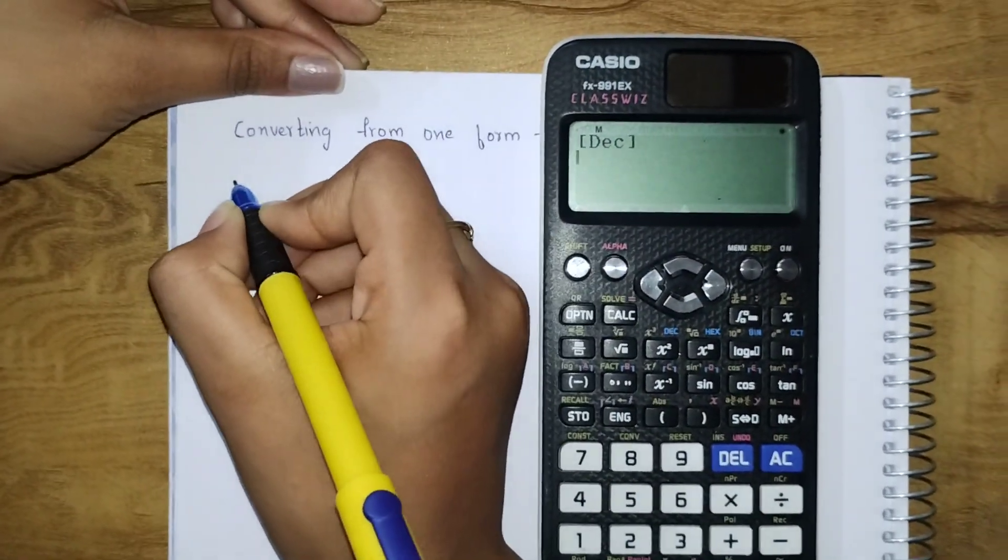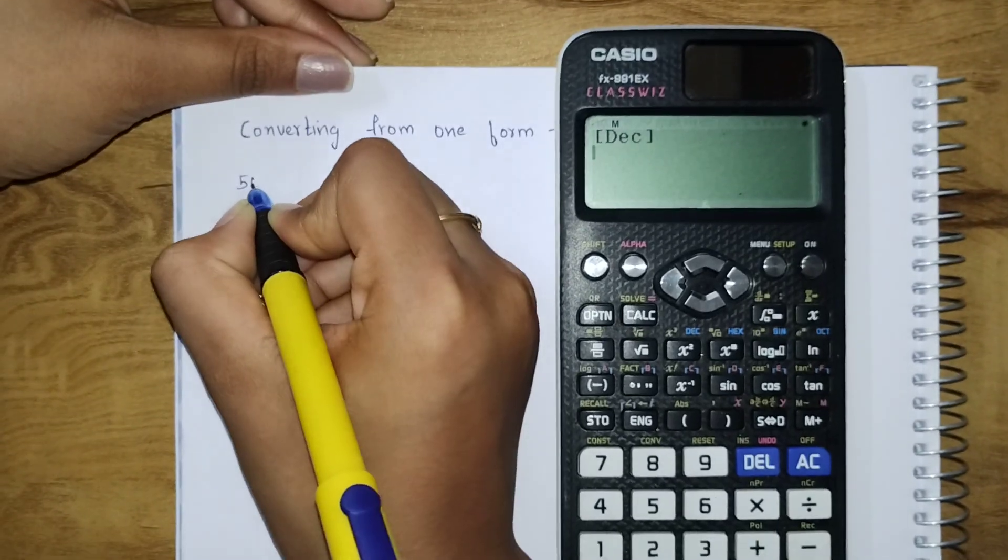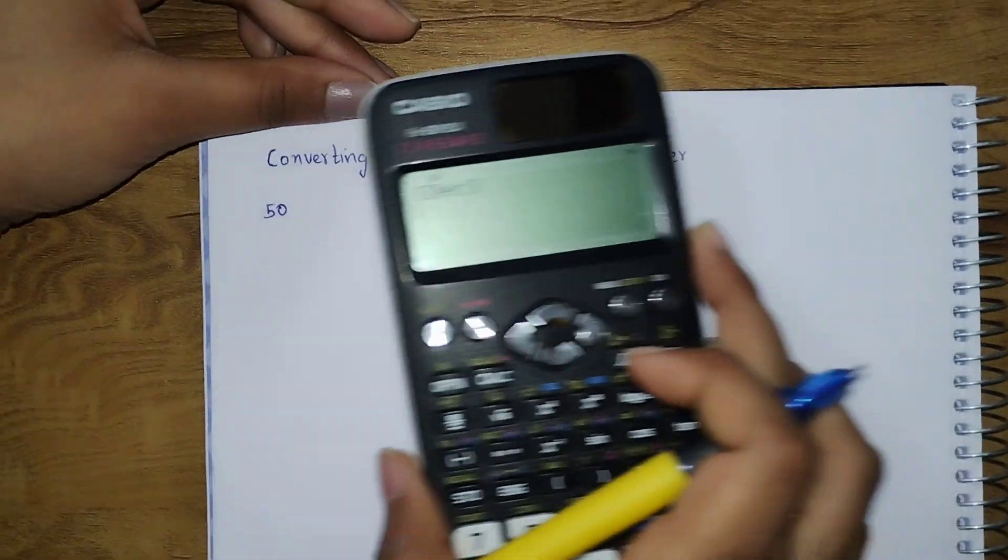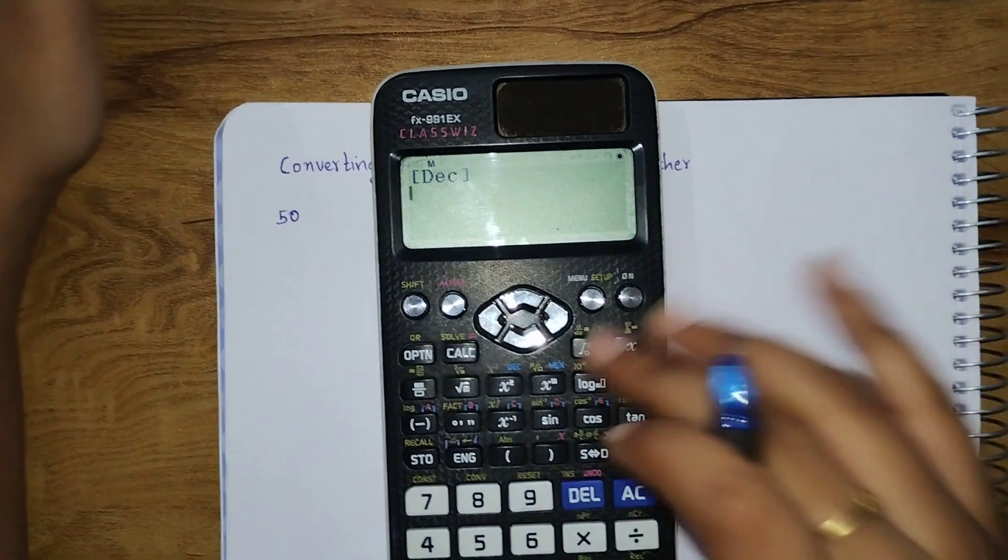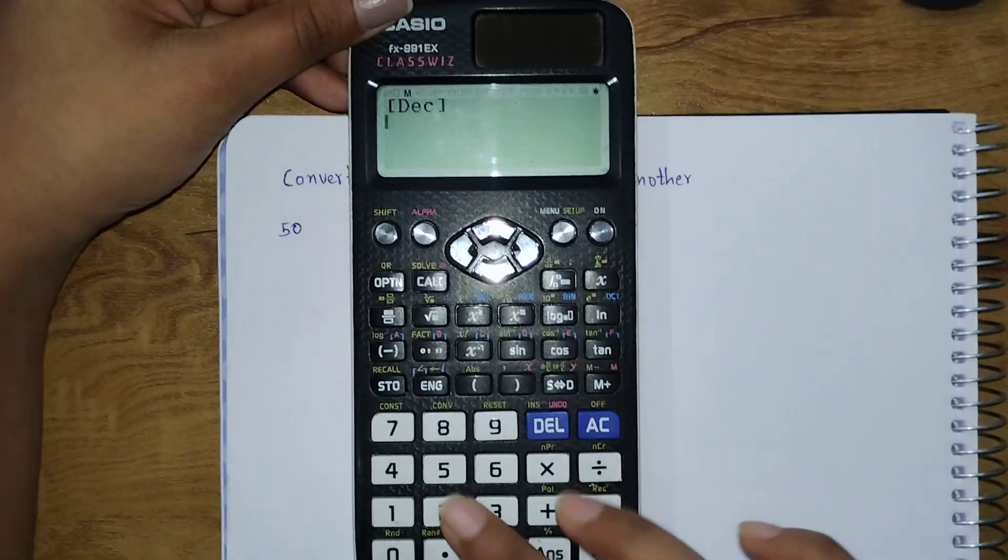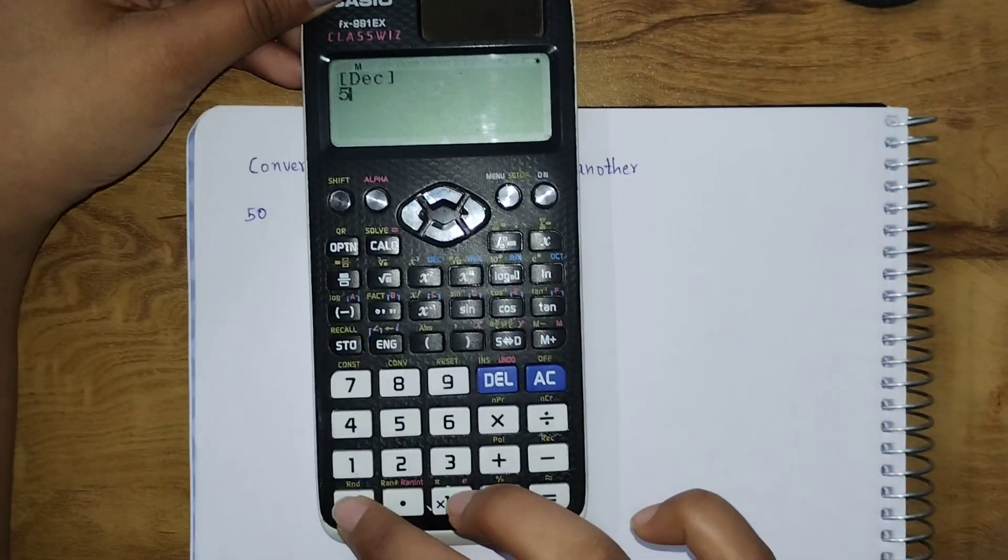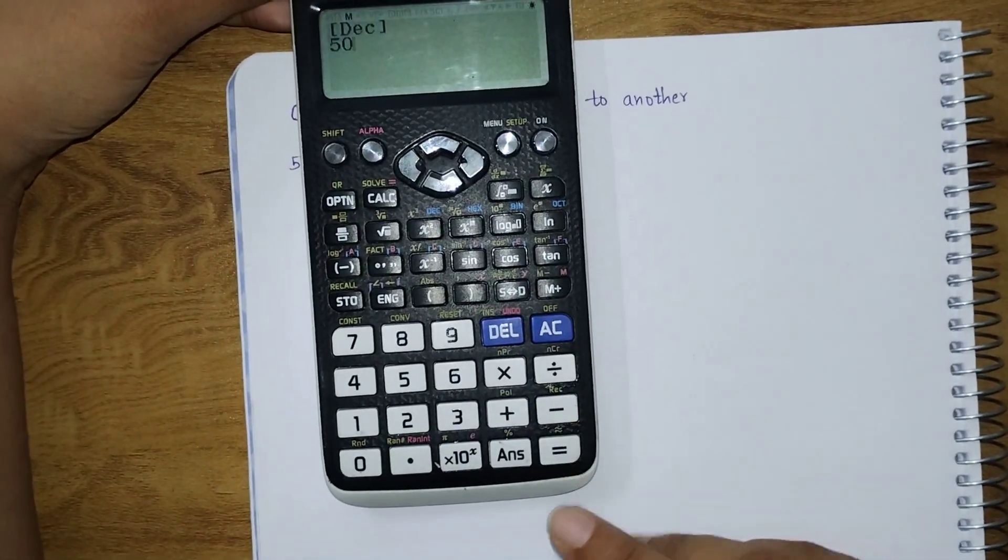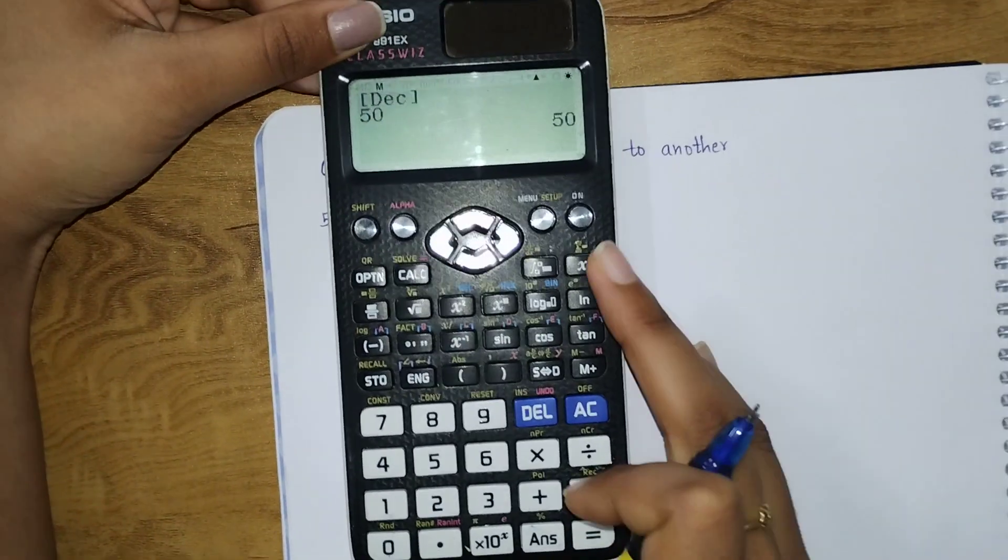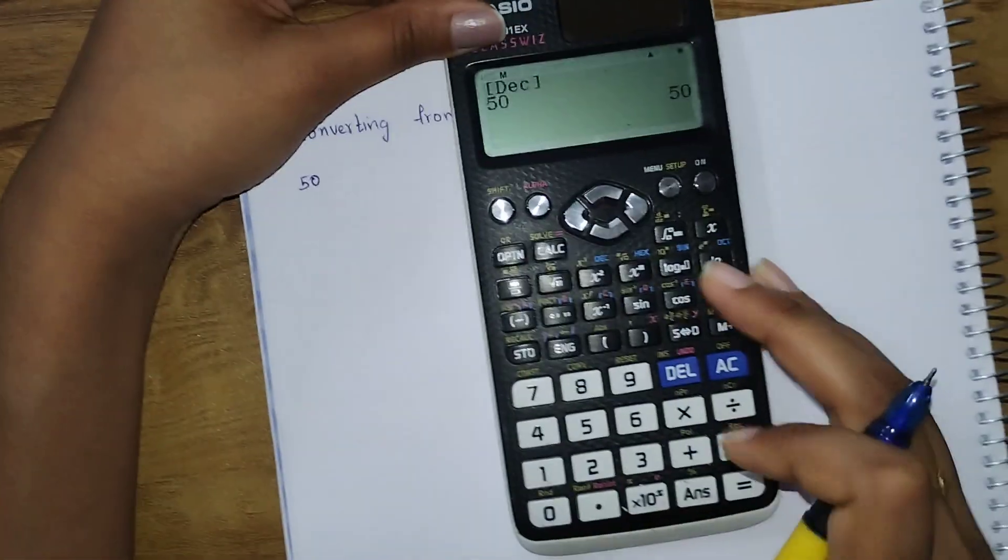Suppose we have the number 50. 50 is a decimal number we need to convert into other forms. Click here 50 and equals to is a must. After clicking the number, equals to is a must. Now which form do you want?